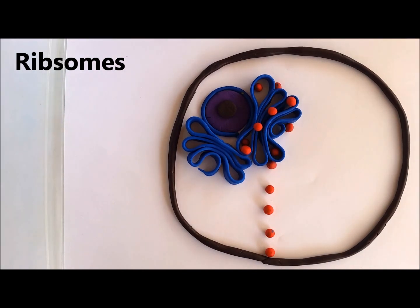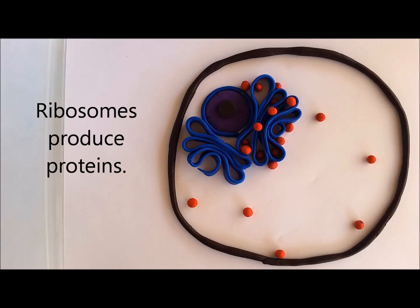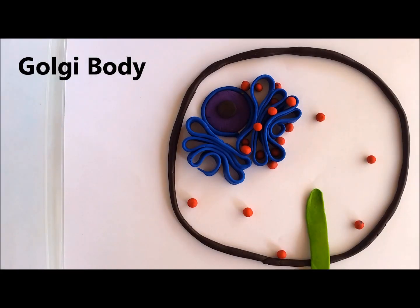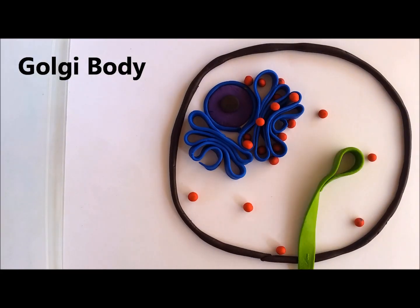Then we have the ribosomes, which we spoke of earlier. Their primary role is to produce proteins. They are highly concentrated on the outside of the rough endoplasmic reticulum, giving it a rough texture, which is where it gets its name from, but they can also be found throughout the cell.